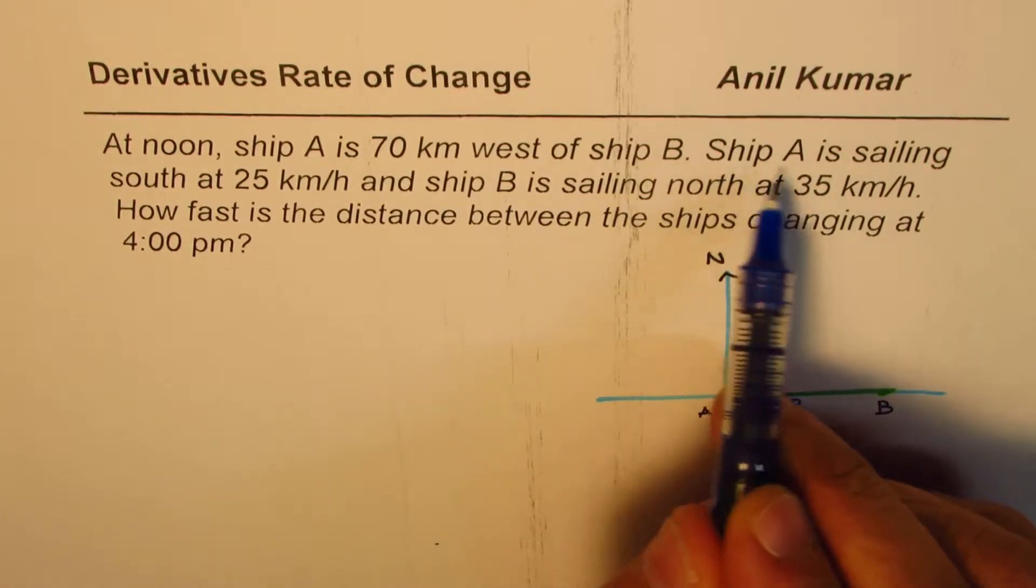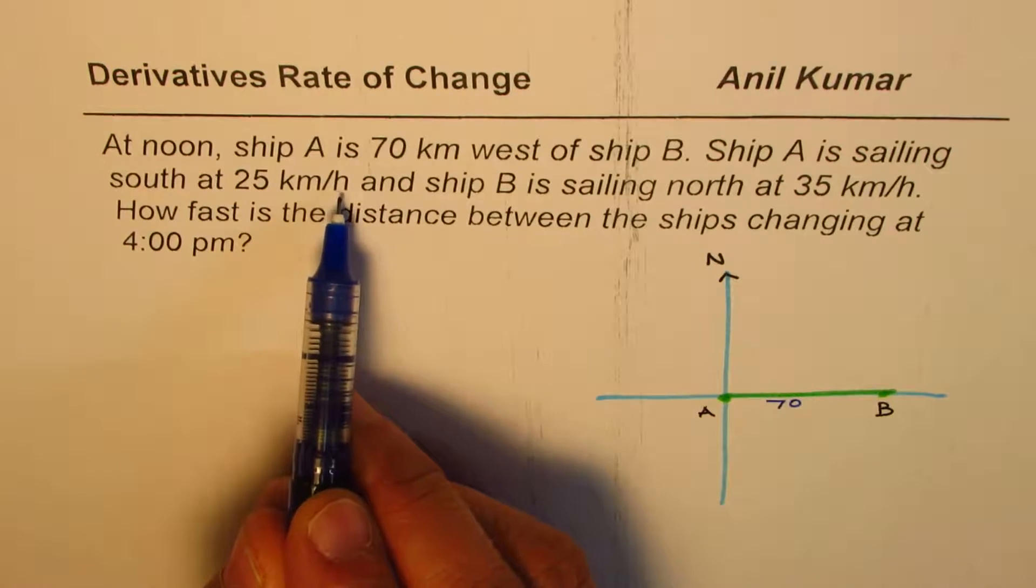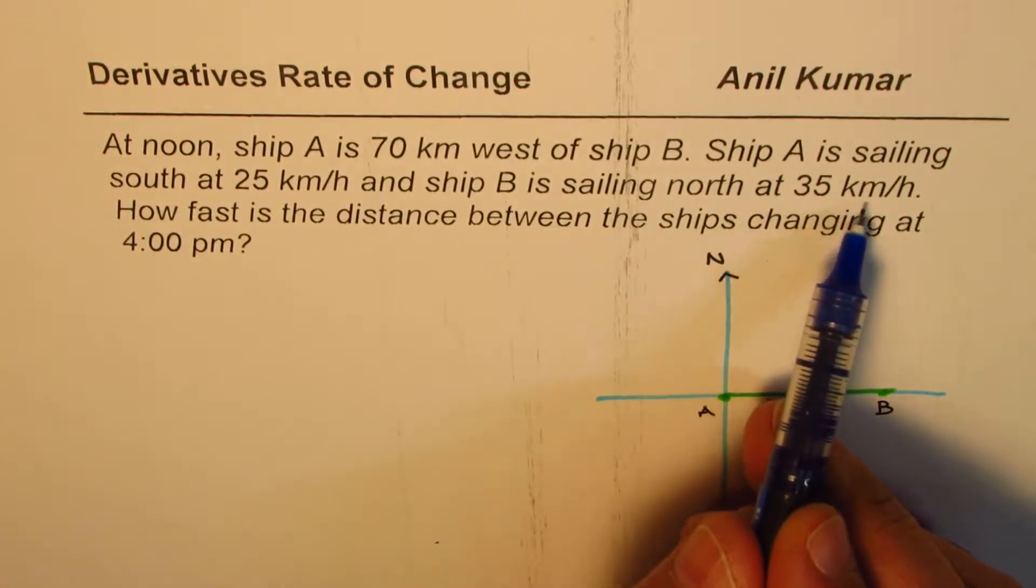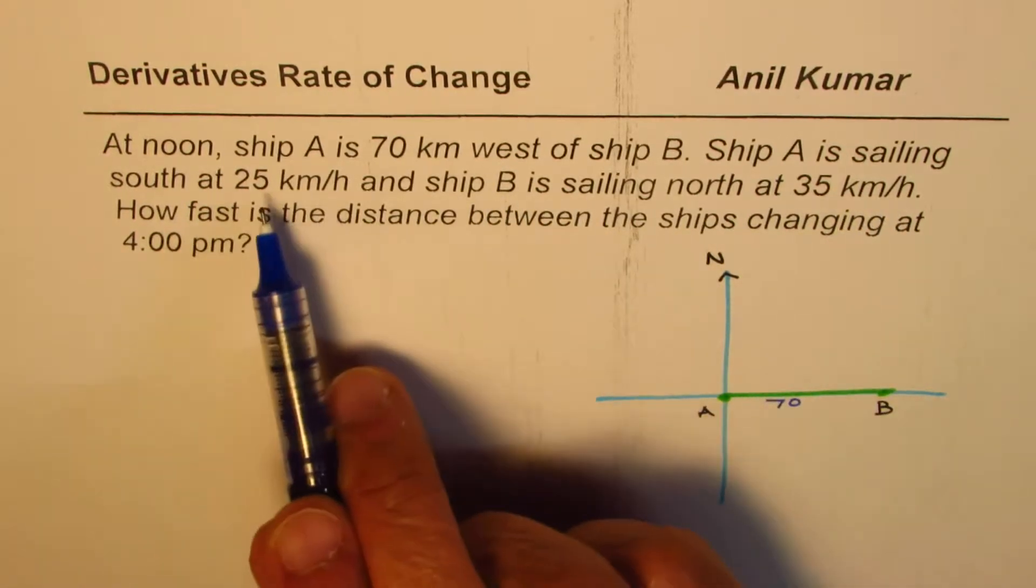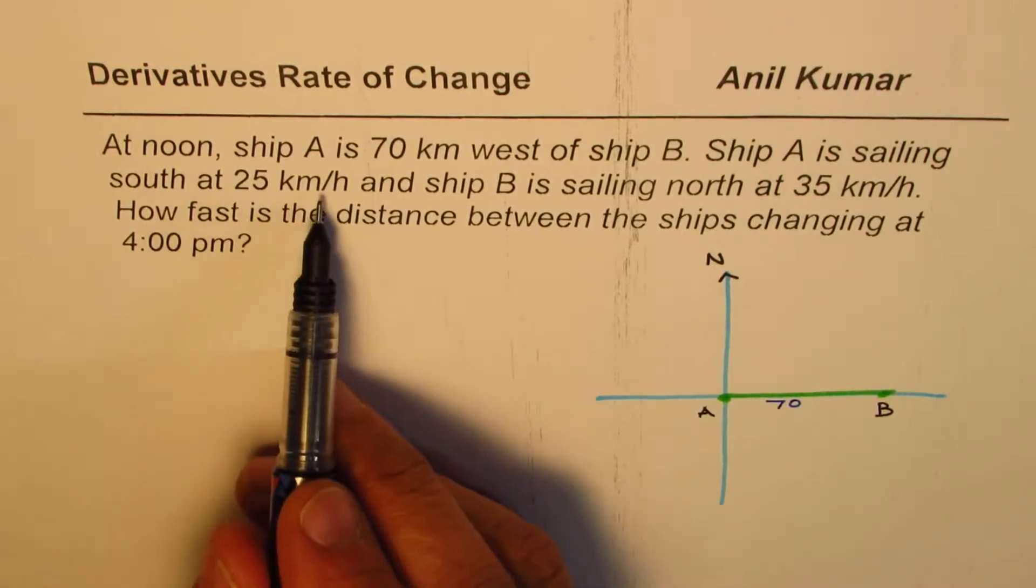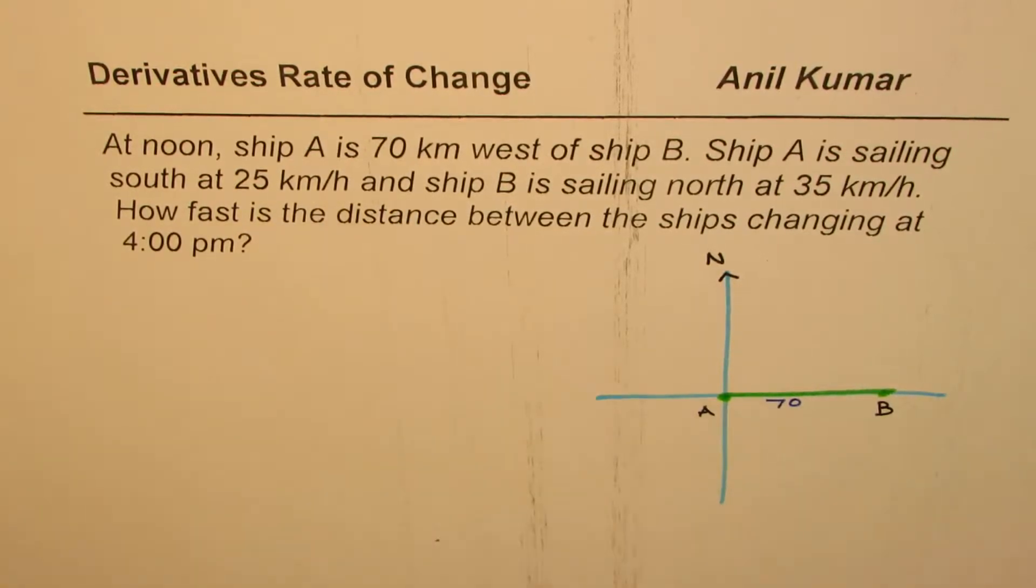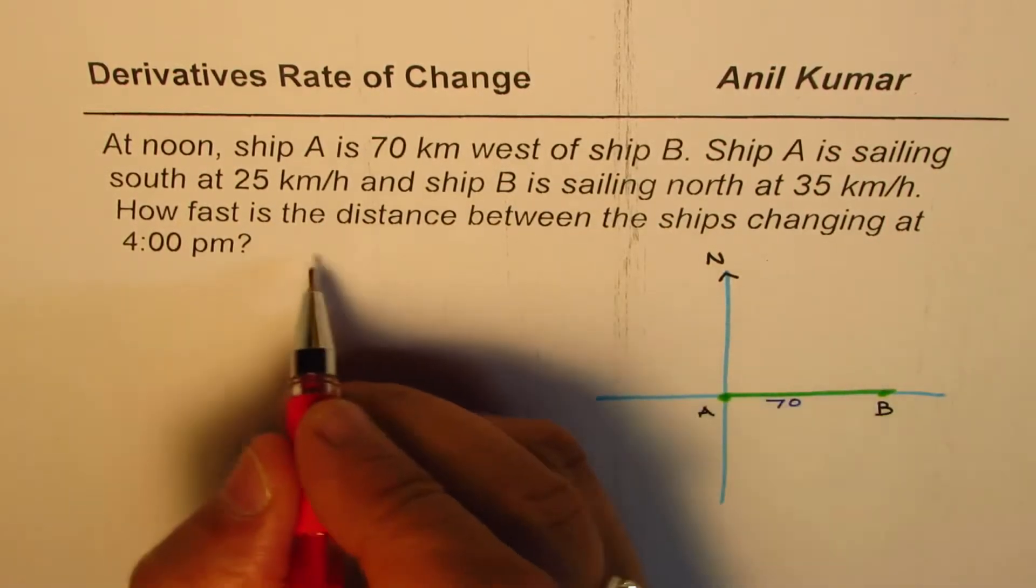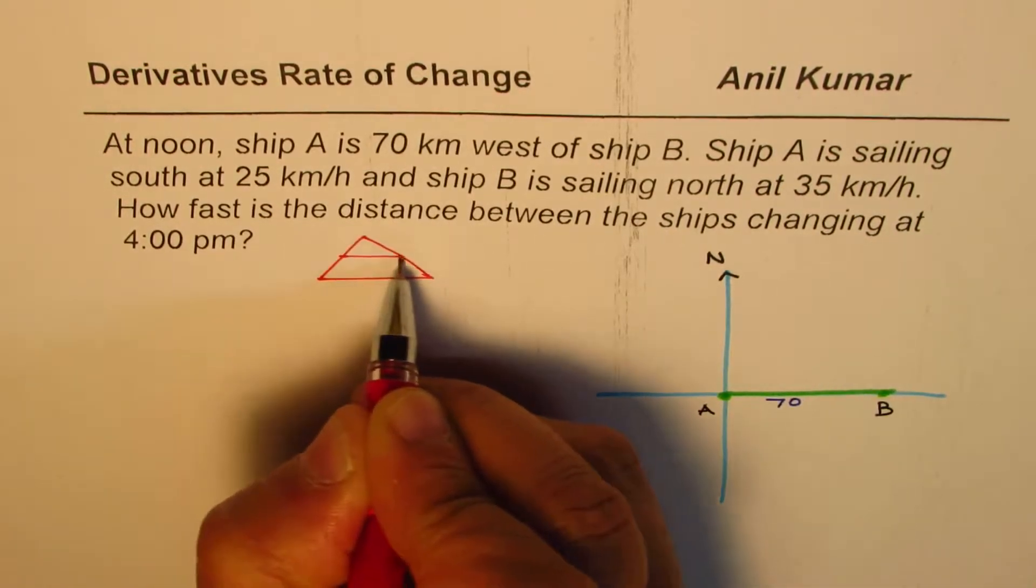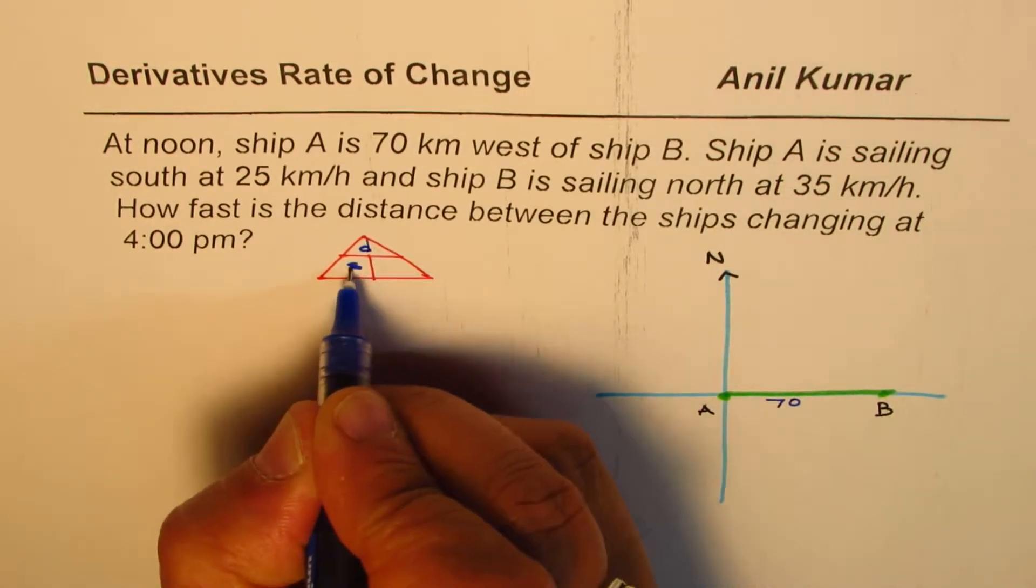Ship A is sailing south at 25 km per hour and ship B is sailing north at 35 km per hour. With time, the distance will be how much? That is important to understand. When we are relating velocity over time, distance is velocity into time. Remember this diagram, in fact a triangle which represents distance, speed and time. What we have here is that the distance is speed into time.